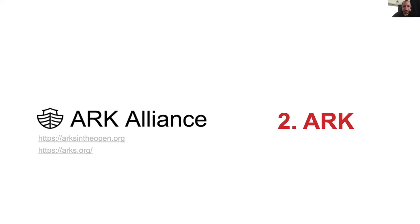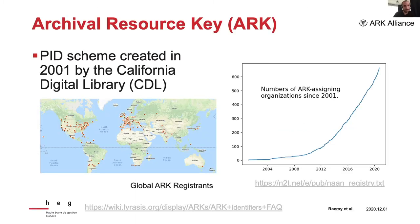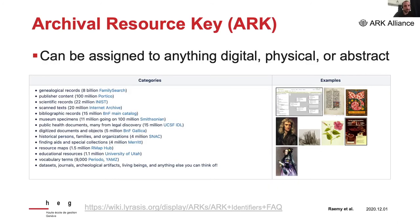ARC is, for us, the best choice to satisfy scientific and cultural heritage sectors in Switzerland. The information in the following slides comes mainly from ARCs in the Open Initiative, which will soon change its name to ARC Alliance. ARC is a scheme that was created in 2001 by the California Digital Library, and over 600 organizations worldwide are now registered to assign ARC identifiers — mostly in North America and France, but with growing adoption in South America and India. One very neat thing with ARC is that it can be assigned to absolutely anything, from research data to bibliographic records or vocabulary terms — basically anything that needs an identifier can get an archival resource key.